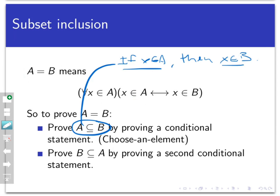That would be one direction of this proof. Then, as with all biconditional statements, I've got to prove the converse — that B is a subset of A. That's also a conditional statement: if you have an element Y that belongs to B, then Y also belongs to A. That's also done using the choose-an-element method. So proving two sets are equal always involves two subset inclusions, and each proof can be done in all the ways we know how to prove conditional statements.